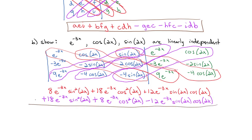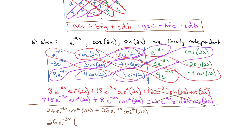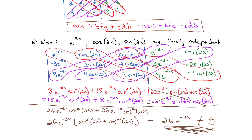When we add these together, we end up with 26e^(-3x) sin²(2x) plus 26e^(-3x) cos²(2x), and the sine-cosine cross terms cancel to zero. Factoring out 26e^(-3x), we're left with sin²(2x) + cos²(2x), which is our favorite trig identity — that equals 1. So the Wronskian comes out to be 26e^(-3x), which we know is not equal to zero. Because it's not equal to zero, we know therefore these three functions are linearly independent.